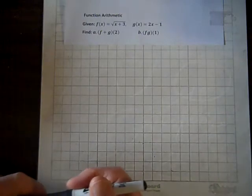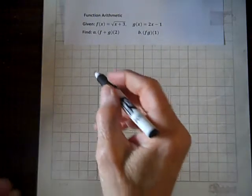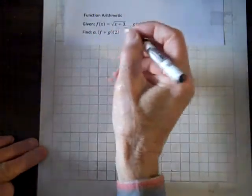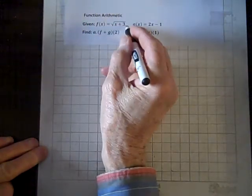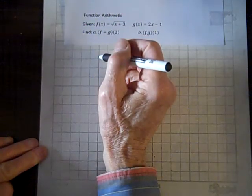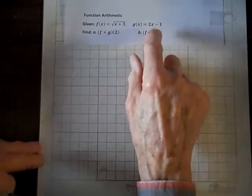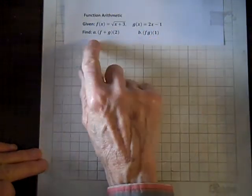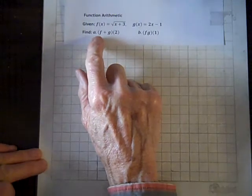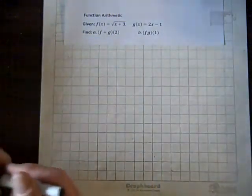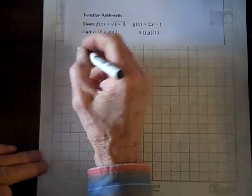We're talking about function arithmetic now. We have f(x) equals root x plus 3 and g(x) equals 2x minus 1. We have to compute f plus g of 2. So let's find f of 2.